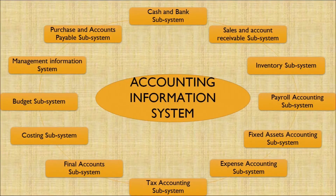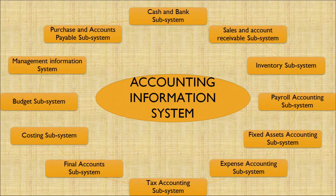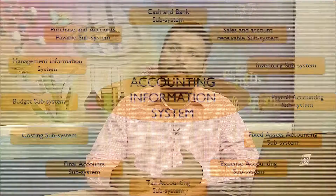There are sub-systems of cash and bank, sales account, inventories, payroll accounts, fixed assets accounts, expense accounting, tax accounting, final accounts, costing, budget, management, and purchase accounts. These are called sub-ledgers of the main ledgers. Therefore, these sub-ledgers contribute to the main ledgers and to how the trial balance is drafted for an organization.